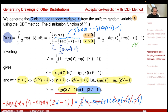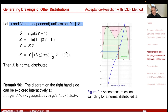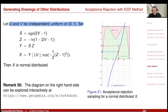Let's implement this 2D method. Summary: I have uniforms u and v, independent on [0,1]. The sign s = sign(2v−1). The exponential-distributed z = −log(1−|2v−1|). The candidate for the normal is y = s·z. Then x is taken as the candidate if accepted: the acceptance criterion is u ≤ exp(−½(z−1)²). Let's implement this algorithm.